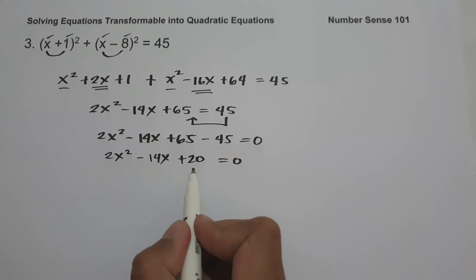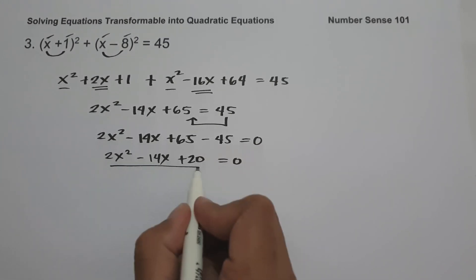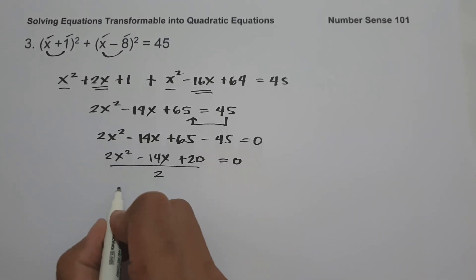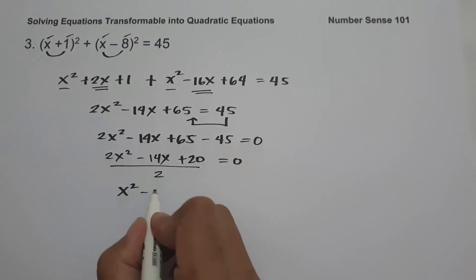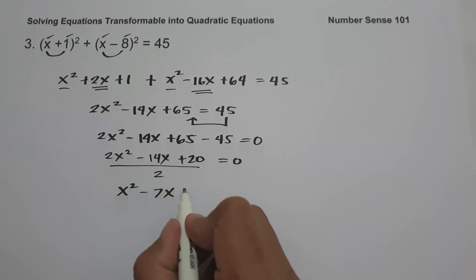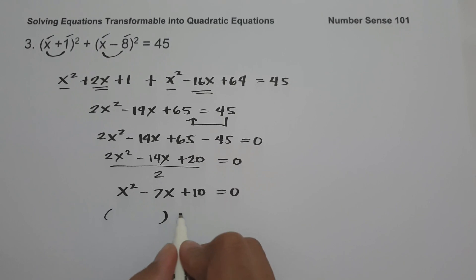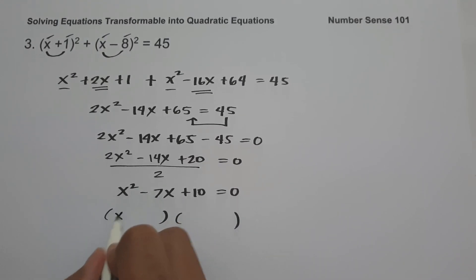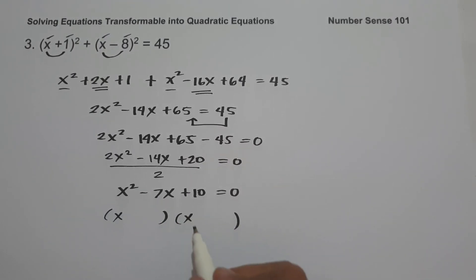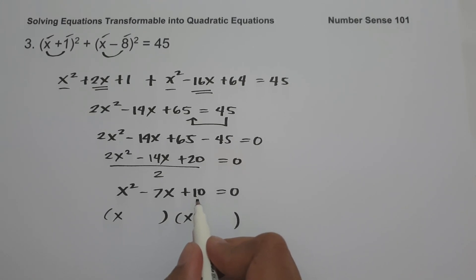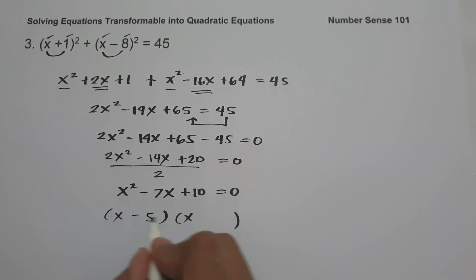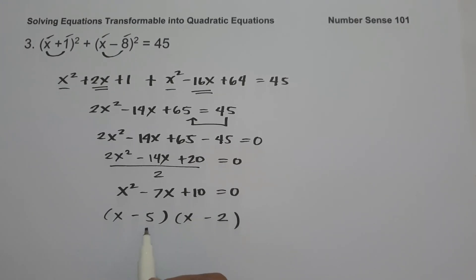Since each coefficient is divisible by 2, we divide the whole equation by 2, giving x squared minus 7x plus 10 equals 0. Factoring: the factors of x squared are x and x. We need two numbers that multiply to positive 10 and add to negative 7: that is negative 5 and negative 2. Negative 5 times negative 2 is positive 10, and negative 5 plus negative 2 is negative 7.